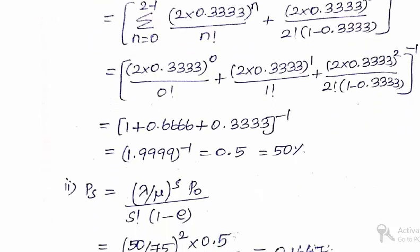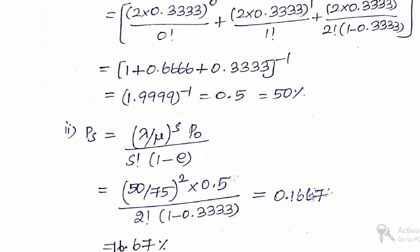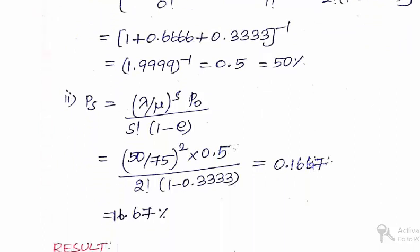Next, using the value of P0, we can calculate the value of Ps, that is the probability of a customer has to wait in the system to get serviced.